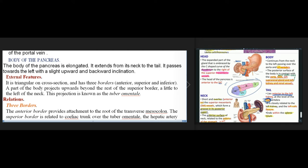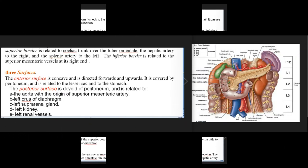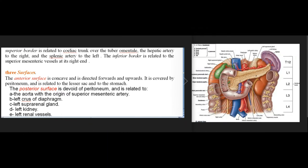Body of the pancreas: elongated, extending from the neck to the tail with a slight upward and backward inclination. It is triangular on cross-section with three borders: anterior, superior, and inferior. A projection upward beyond the superior border to the left of the neck is called the tuber omentale. The anterior border provides attachment to the root of the transverse mesocolon. The superior border is related to the coeliac trunk over the tuber omentale, the hepatic artery to the right, and the splenic artery to the left. The inferior border is related to the superior mesenteric vessels at its right end.